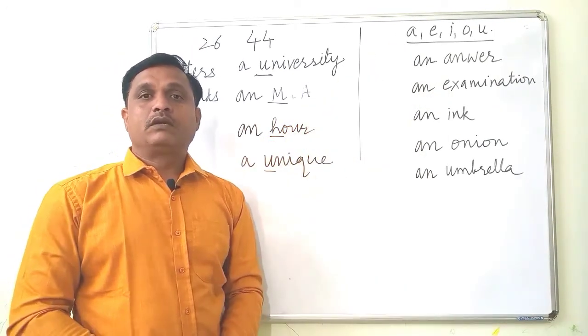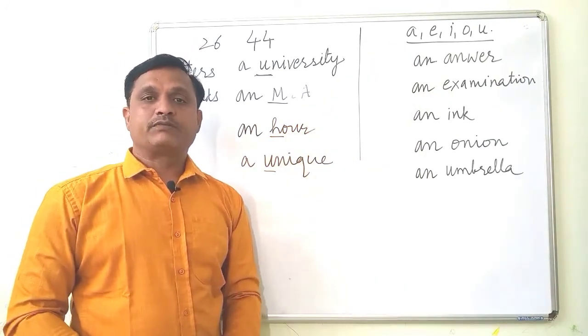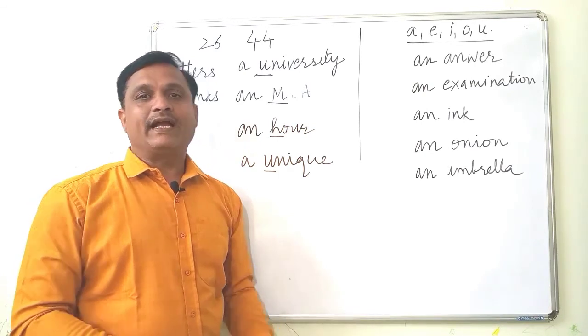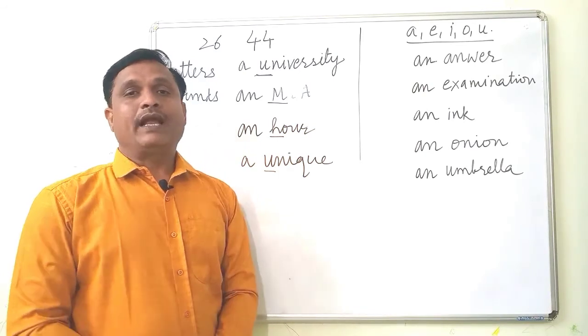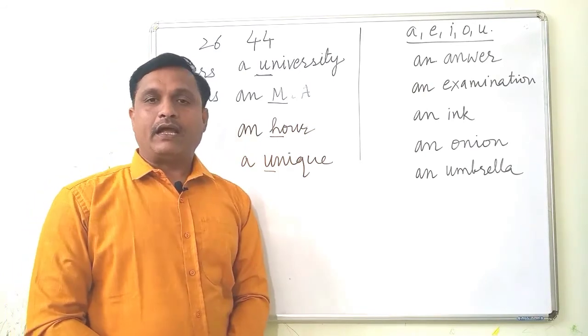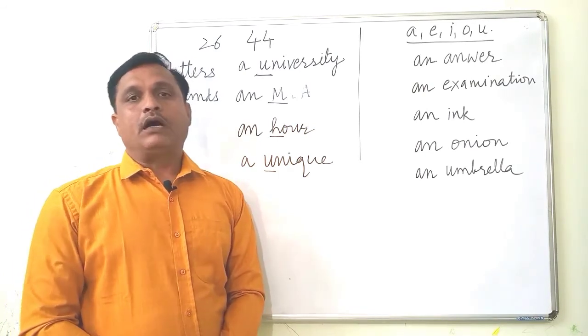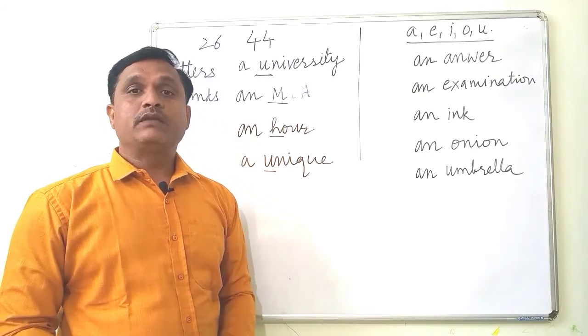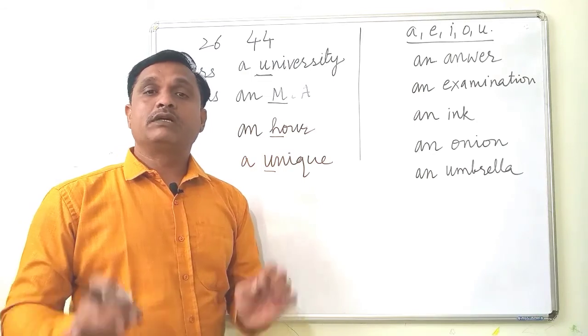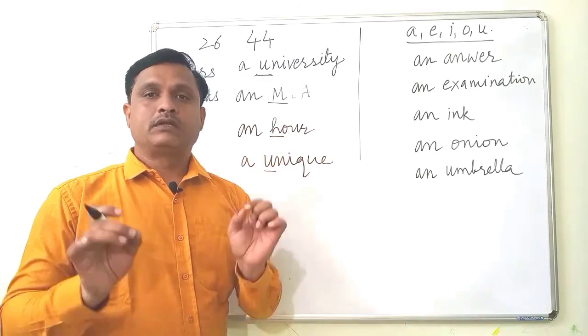So this is what differentiates between A and AN — whether the following word begins with a vowel sound or a consonant sound, not simply a vowel letter or consonant letter.